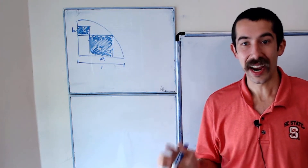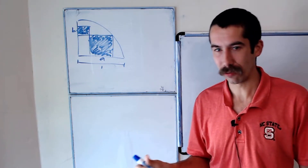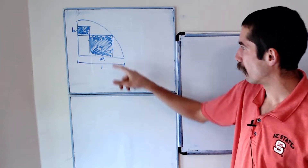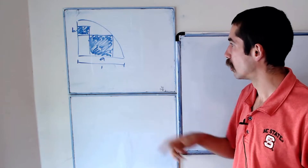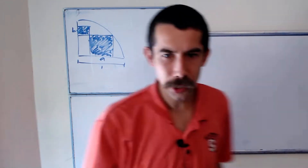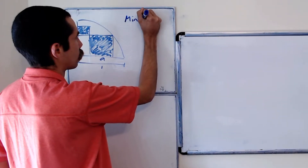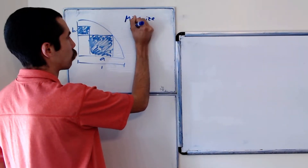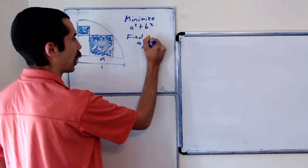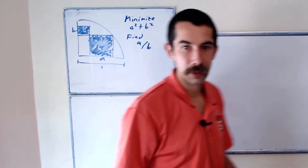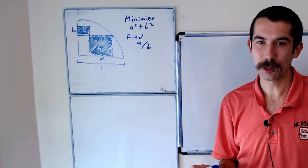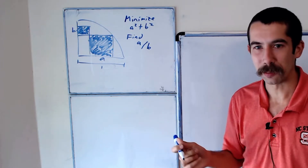I have a geometry problem for you today, and it's going to take some calculus to solve. We have a quarter circle with radius 1 and two squares as drawn — one with side length a, one with side length b. We want to minimize a squared plus b squared and find the ratio of a to b. Pause the video and try it on your own — the algebra gets messy — or just watch me solve it.